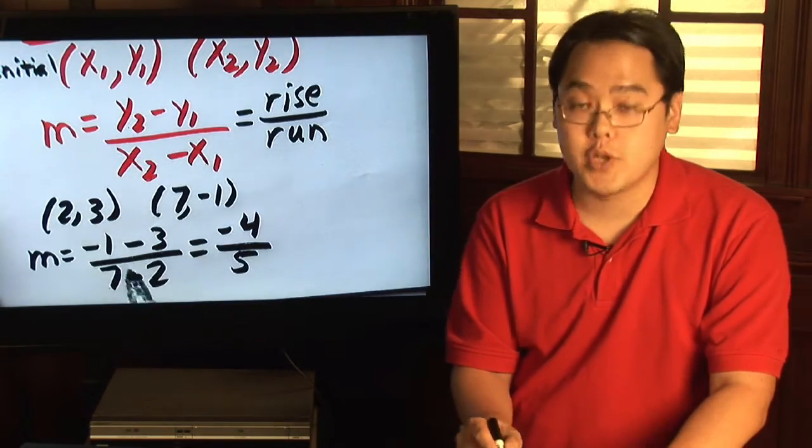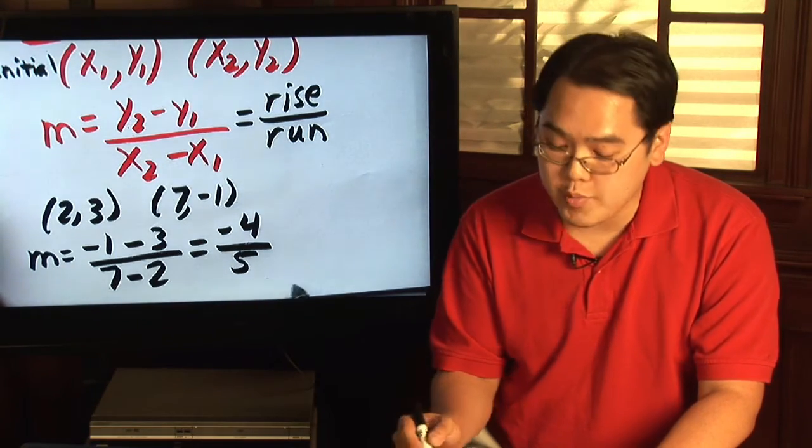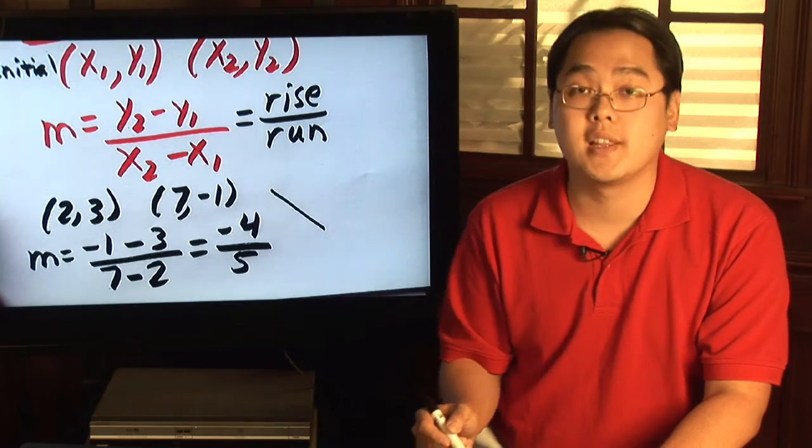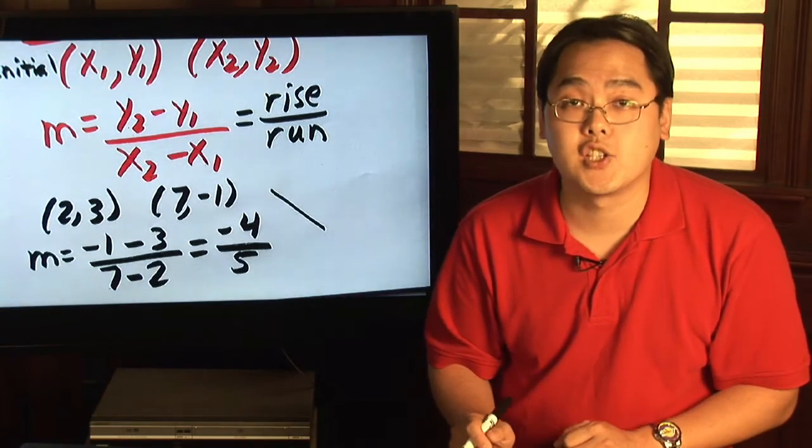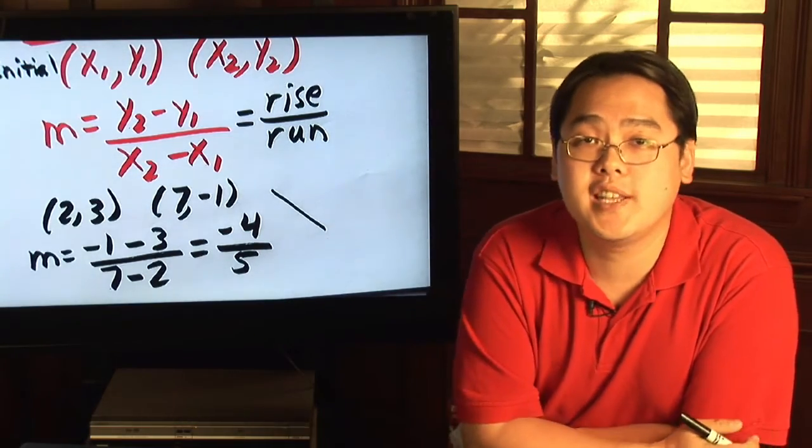So the slope between these two points is negative 4 fifths. Now, because you have a negative number for slope, that means it is a decreasing line, which means the line is on a decline. So my name is Jimmy Chang and that's an example as to how you calculate slope.